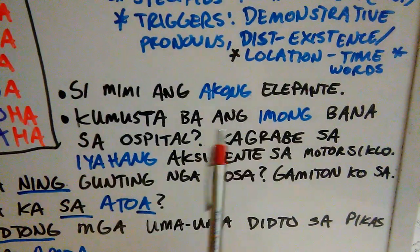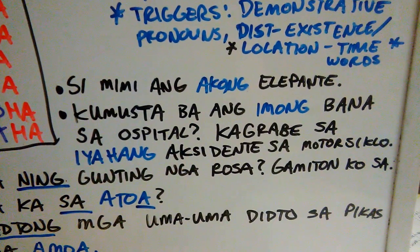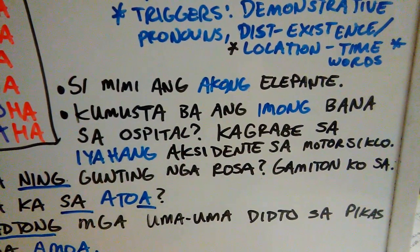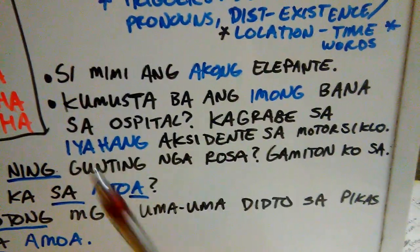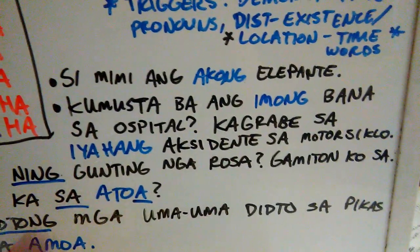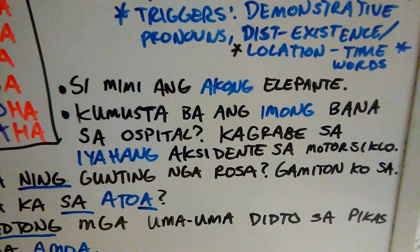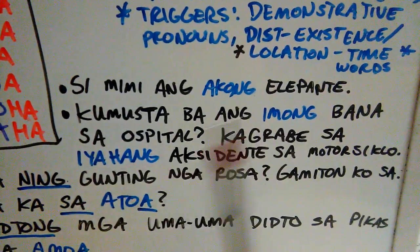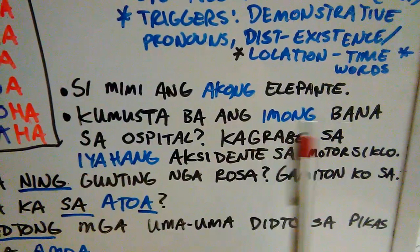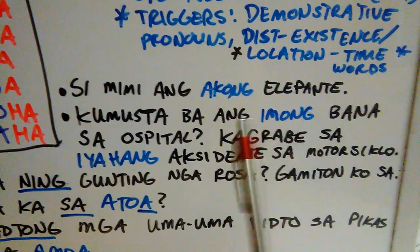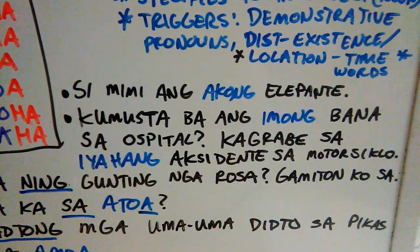The next sentence is a transition into the topic. It is: Kumusta ba ang imong bana sa ospital? Kagrabe sa iyang aksidente sa motorsiklo. The first sentence is a question: Kumusta ba ang imong bana sa ospital? It's not specific again — it's just your husband, imong bana, your husband.